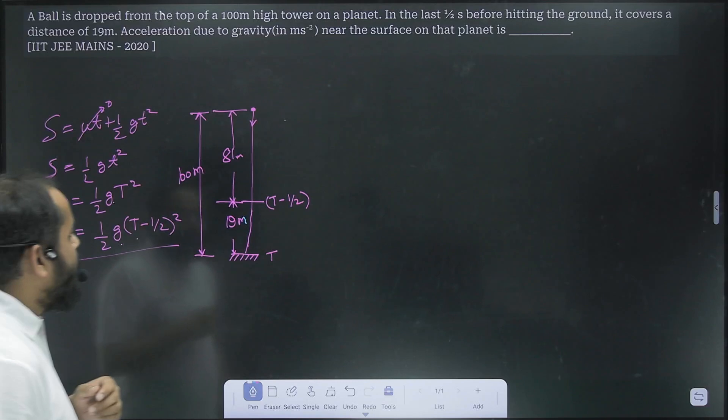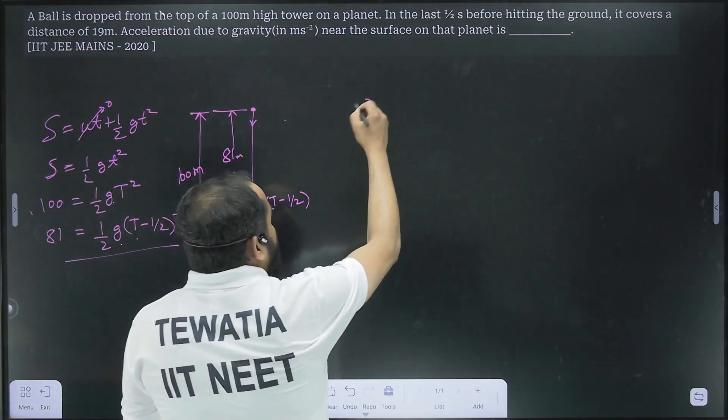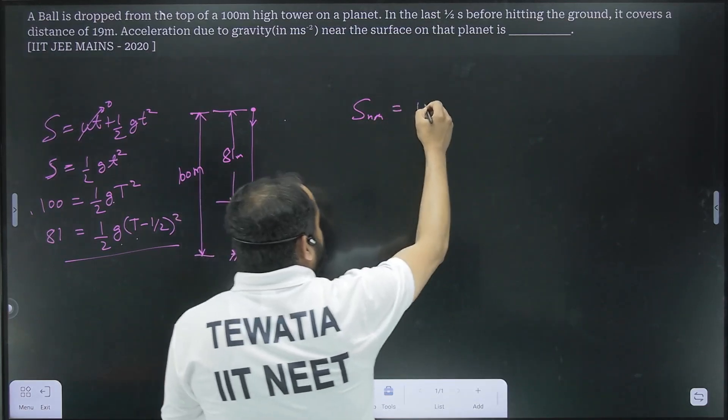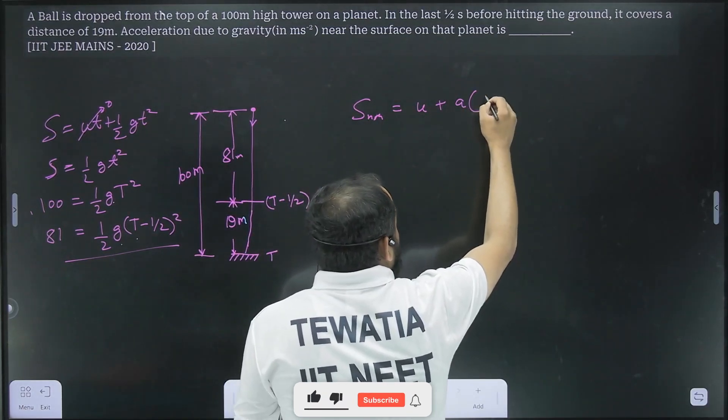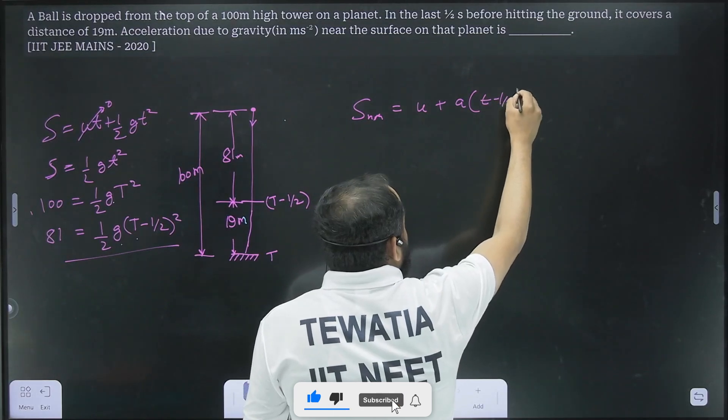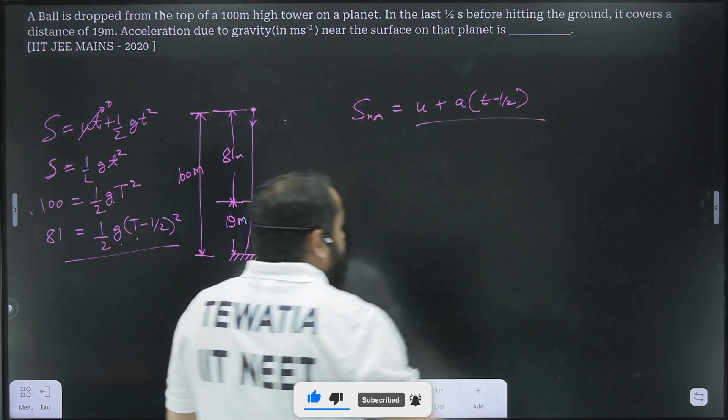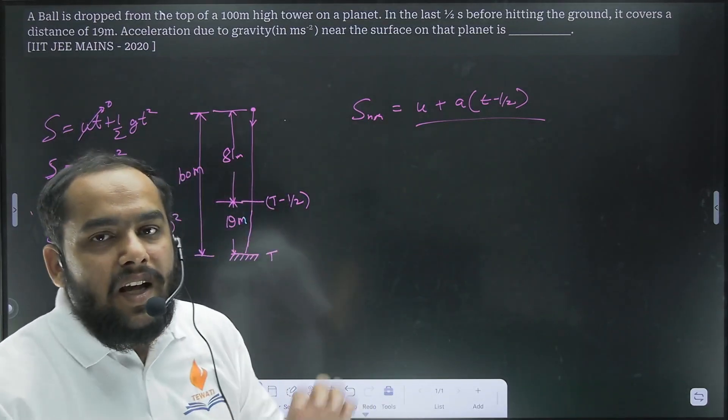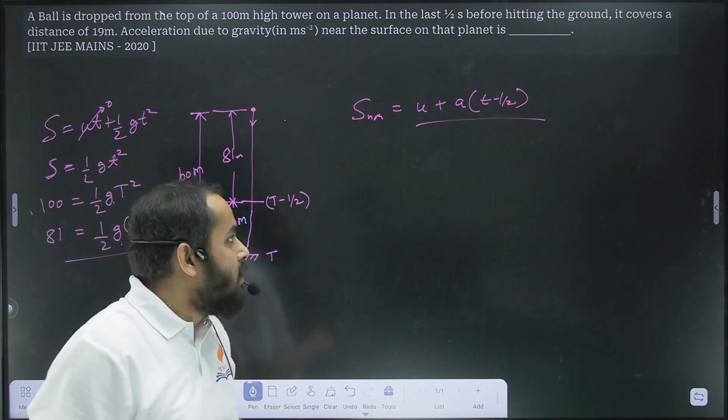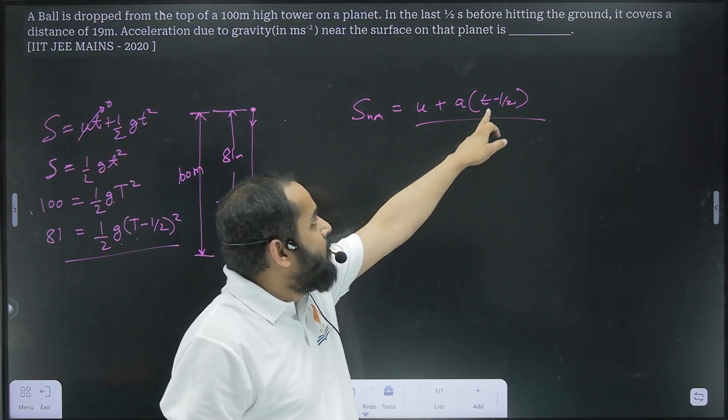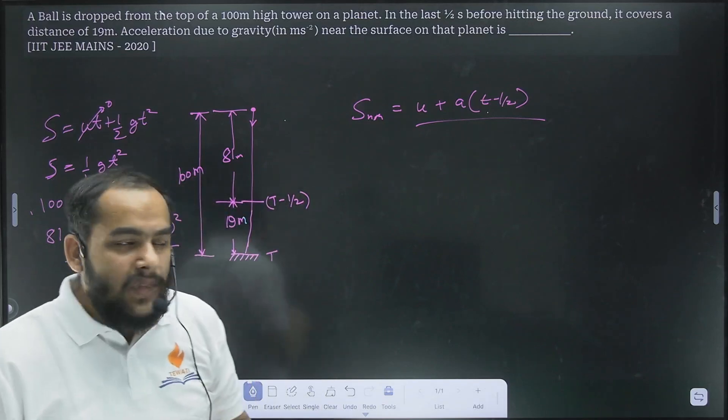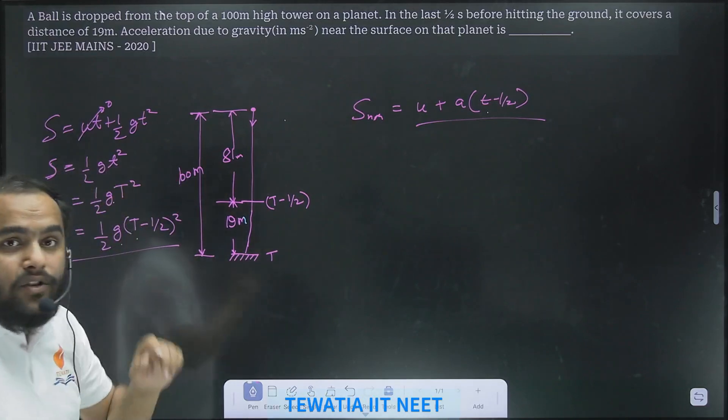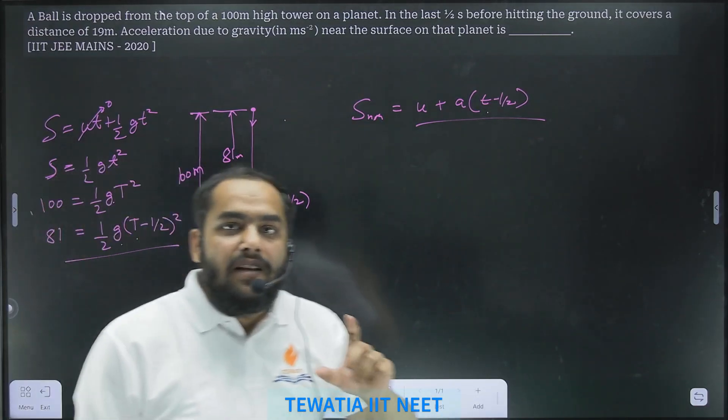Another thing that you are tempted to do here is use the formula s nth, which is equal to u plus a into t minus 1 by 2. This formula gives you the distance travelled by a projectile in the nth second. But as you can see in the question, the 19 meters we are given is not in the last 1 second. It is in the last half second. So this formula will not apply here.